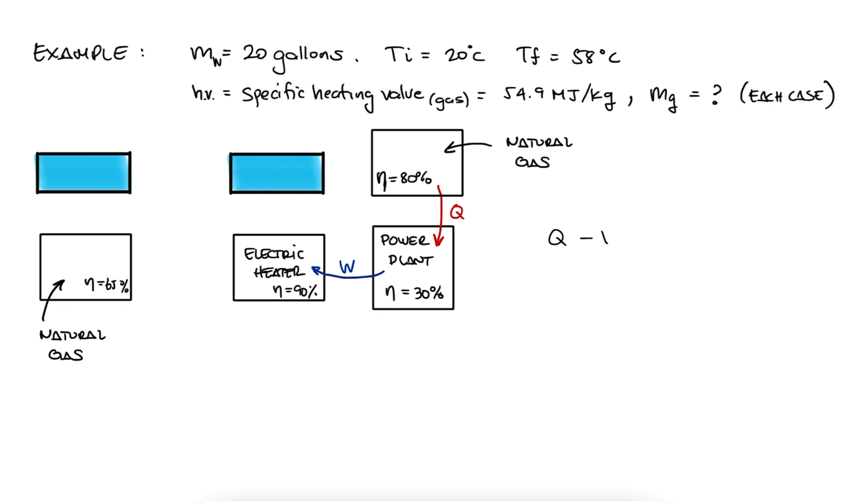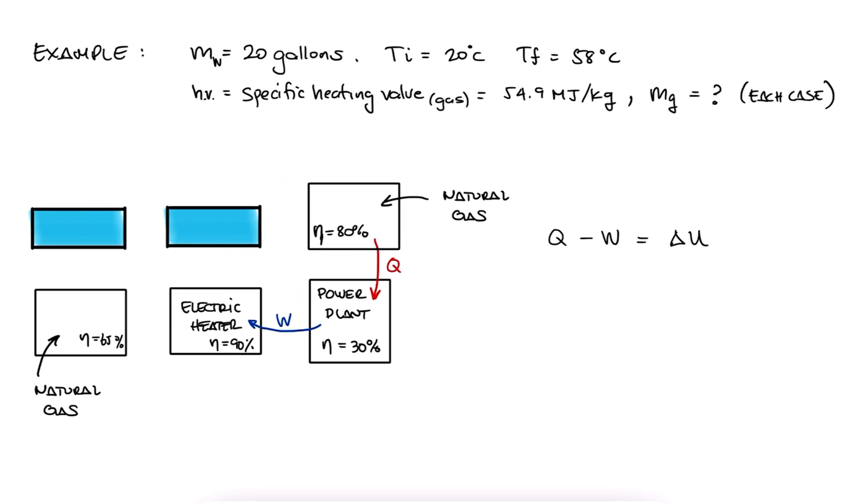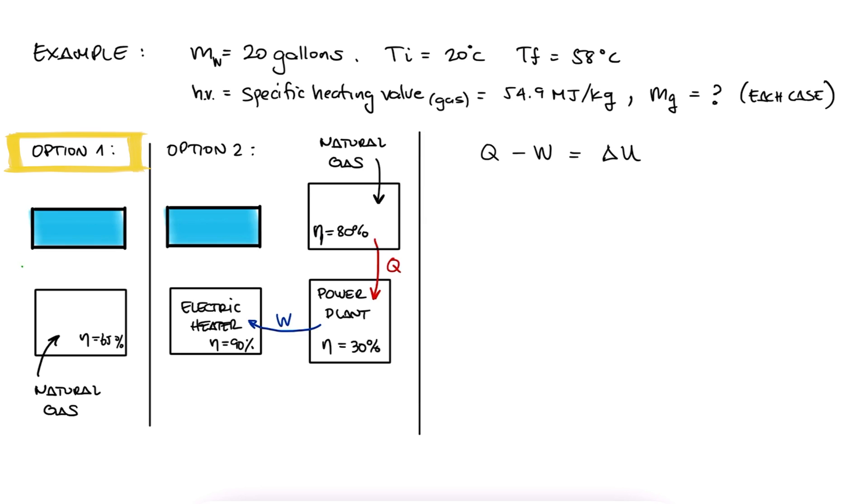Right, so we know from the first law equation that the change in internal energy is equal to the heat transfer minus the total work. In the case of the gas heater, and with our control volume being the water reservoir, we only have heat coming in from the burning of the gas, no work. For the control volume of the heater, we have that the heating value of the gas itself, which is the specific heat value times the mass of gas.